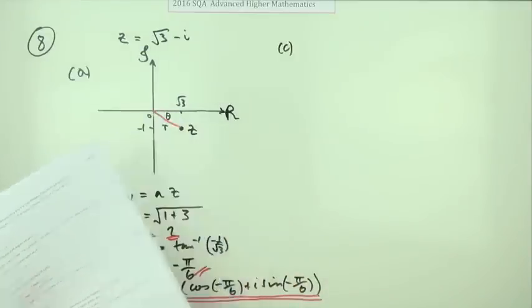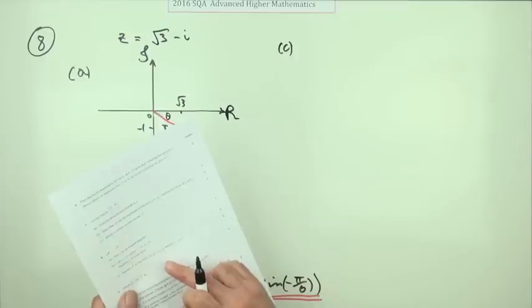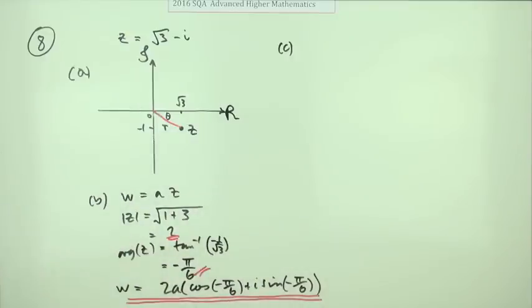C. Well, no, it was only two marks that bit. C. Express w to the power eight back in rectangular form. Well, the reason that you've got w here in polar form is it's easy to find the power of it.